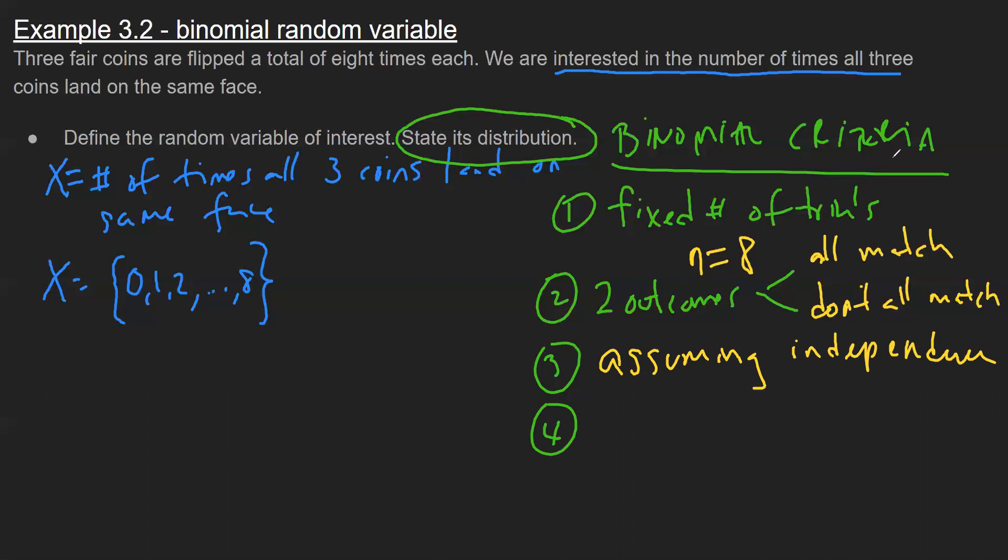Finally, the last one is that you have a fixed probability of success. The probability of getting your success, notation is lowercase p, and this is constant. For this particular example, we can figure it out because the success is where all three coins land on the same face. That means there are only two outcomes: all heads or all tails. So the probability is two successes out of eight total outcomes from flipping three coins, which simplifies to 0.25.